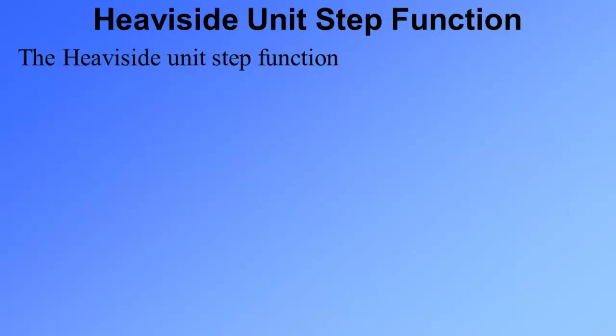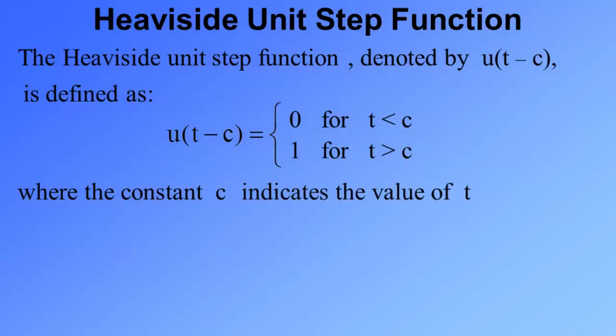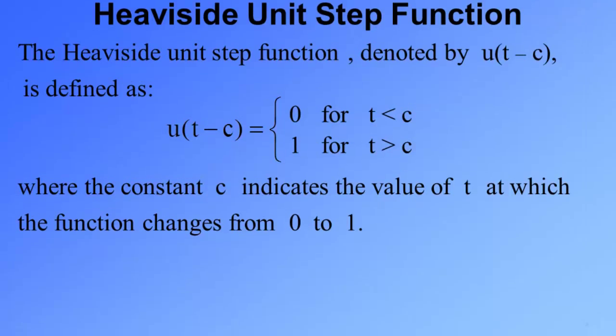The Heaviside unit step function, denoted by u(t-c), is defined as u(t-c) equal to 0 if time t is less than c, and is 1 if t is more than c, where the constant c indicates the value of time t at which the function changes from 0 to 1.